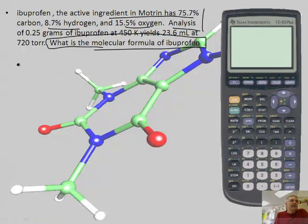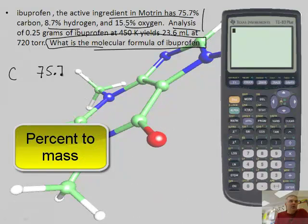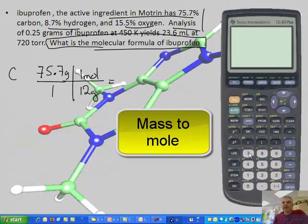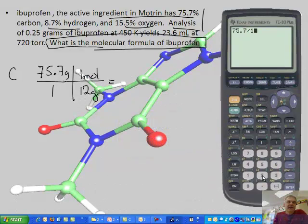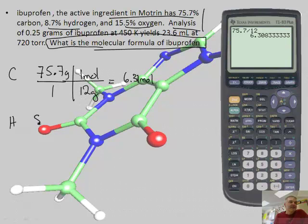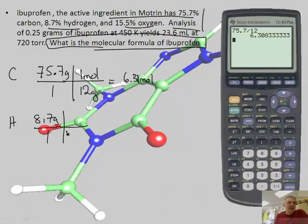Okay, Motrin. 75.7% carbon, so I'm going to say 75.7 grams and convert to moles. There's 12 grams in one mole of carbon, so 75.7 divided by 12 gives me 6.31 moles. Now I have hydrogen, and that's 8.7 grams. This is the easy one because there's just one gram in one mole, so that'd be 8.7 moles.